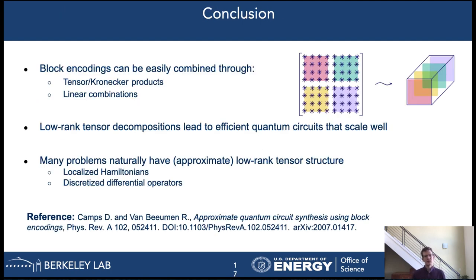To conclude, in this talk we have shown that block encodings are a versatile tool in circuit synthesis as they can be efficiently combined through tensor products and linear combinations. These results show that low rank tensor decompositions lead to efficient quantum circuits that have good scaling properties and overcome some of the issues with other algorithms. Many interesting problems naturally have low rank tensor structure such that our technique is expected to be widely applicable. We discussed an example of a localized Hamiltonian for the Heisenberg model. Another example are discretized differential operators. They fit the format perfectly as well. With that I would like to conclude my talk. I would like to thank you for your attention and open up the virtual floor to questions.